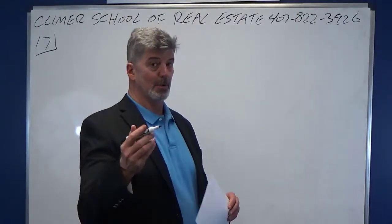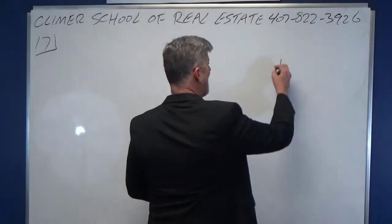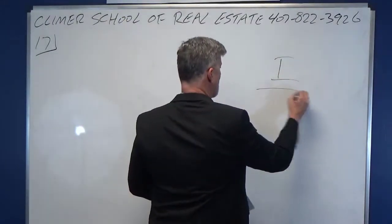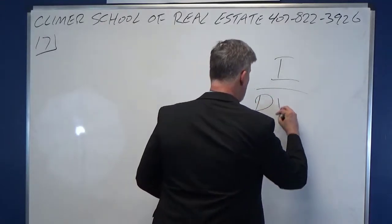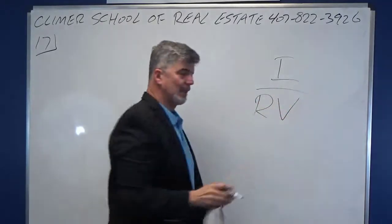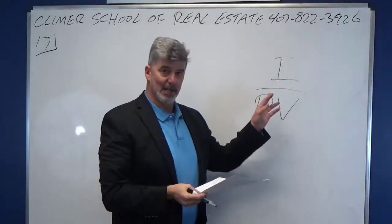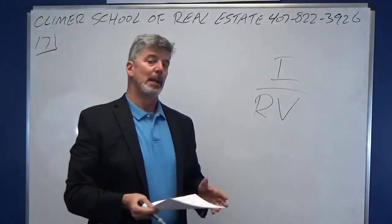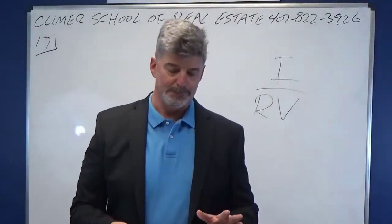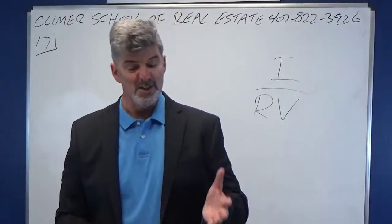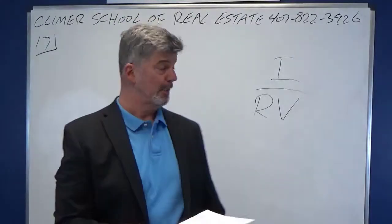And that is good old I over RV. Now, I is income — and it's net operating income. V is value. In real life it can be whatever you want it to be, and on your state exam it's whatever the problem tells you.